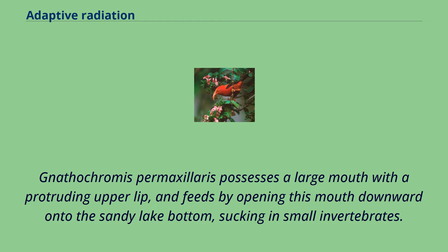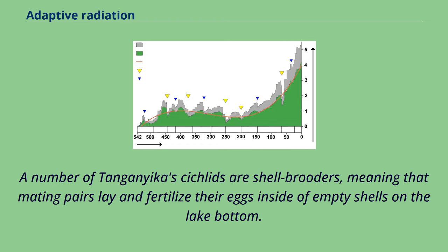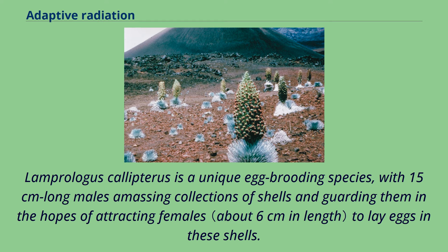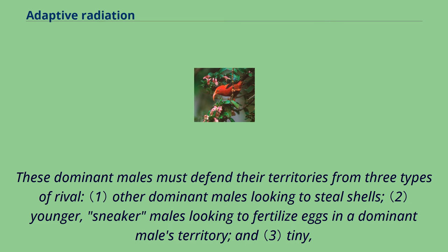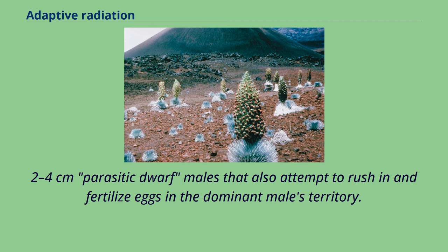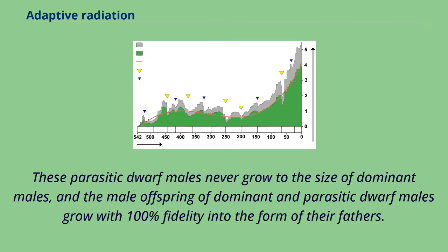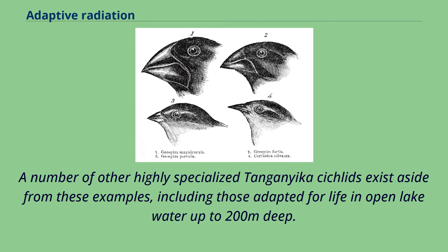A number of Tanganyika's cichlids are shell brooders, meaning that mating pairs lay and fertilize their eggs inside of empty shells on the lake bottom. Lamprologus calypterus is a unique egg-brooding species, with 15 cm long males amassing collections of shells and guarding them in hopes of attracting females. These dominant males must defend their territories from three types of rival: other dominant males looking to steal shells, younger sneaker males looking to fertilize eggs in a dominant male's territory, and tiny 2–4 cm parasitic dwarf males that also attempt to rush in and fertilize eggs. These parasitic dwarf males never grow to the size of dominant males, and the male offspring of dominant and parasitic dwarf males grow with 100% fidelity into the form of their fathers. A number of other highly specialized Tanganyika cichlids exist, including those adapted for life in open lake water up to 200 m deep.